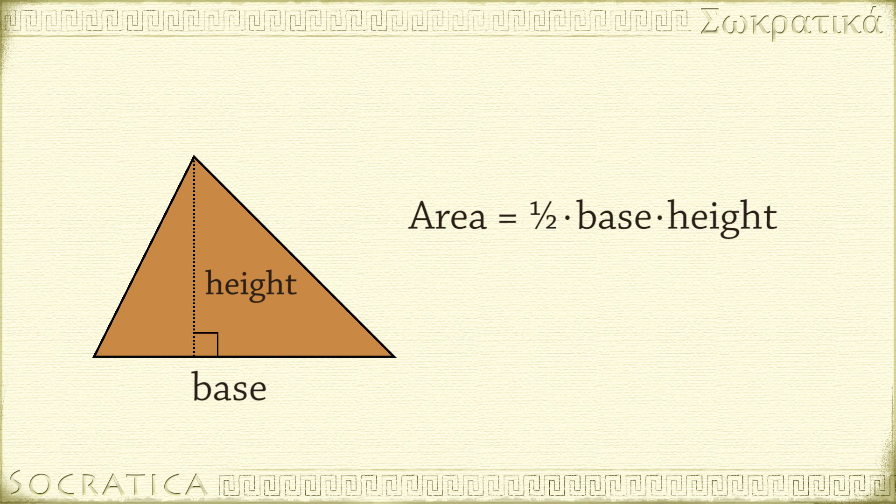The area of the triangle is then equal to one half the length of the base times the length of the height. This is said more simply as: the area is one half base times height. You write the formula like this.